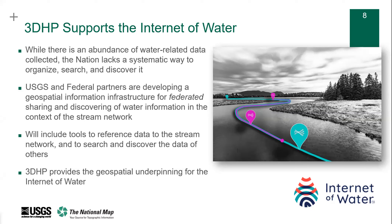One key aspect of the vision for 3DHP is supporting the Internet of Water. There is a lot of water-related data collected across the nation from many agencies and entities, but we lack a systematic way to organize and discover it. USGS and our federal partners are developing an information infrastructure for federated sharing and discovery of water information in the context of the stream network, and 3DHP is envisioned to provide the geospatial underpinning for the Internet of Water.